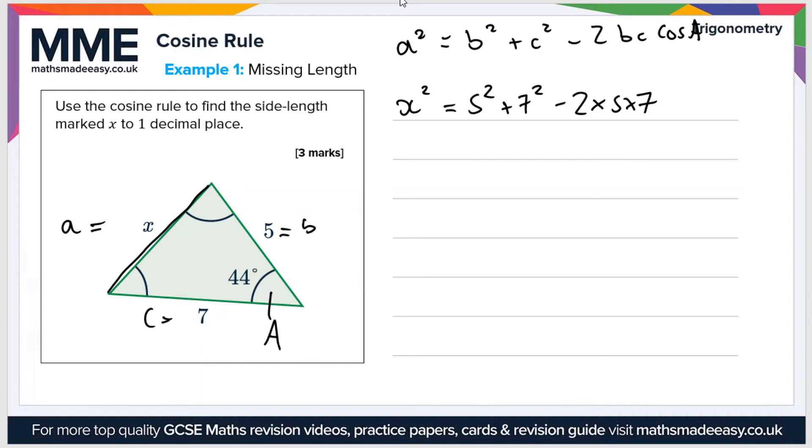So 5 times 7 times cos a and a is 44 degrees. So let's just simplify this a bit. So x squared equals 25 plus 49 minus 2 times 5 which is 10 times 7 is 70.